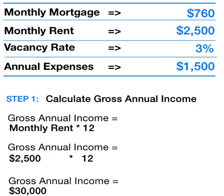Welcome to the break-even ratio. In this session we are going to explain what the break-even ratio is and we're going to go through a simple calculation so that you know how to calculate it yourself. The break-even ratio is an indicator used by lenders when underwriting real estate investments. Its purpose is to estimate how likely an investment is to default on its loan.